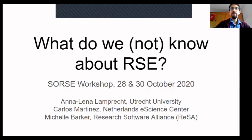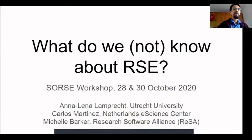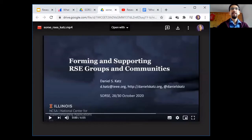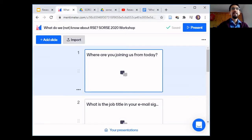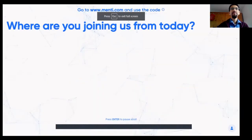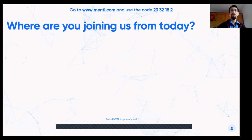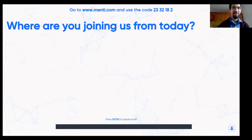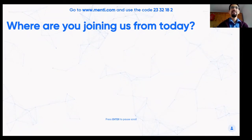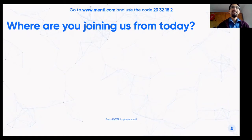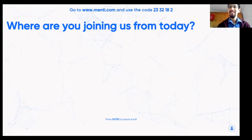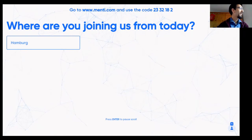We wanted to start with a little icebreaker. Anna has prepared a Mentimeter — if you want to open your favorite browser and visit menti.com and enter the code 23 32 18 2. Maybe you can tell us where you're joining us from today. It's interesting to see how much of a geographical distribution we get.